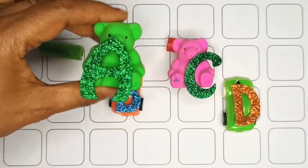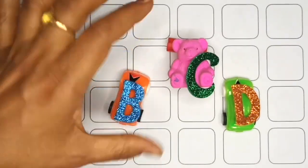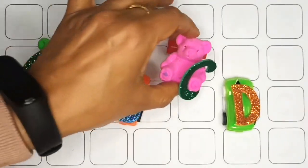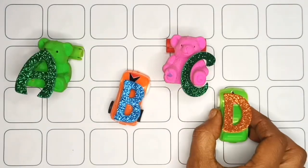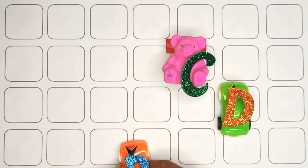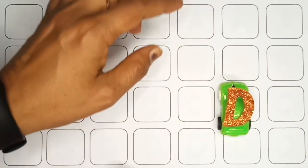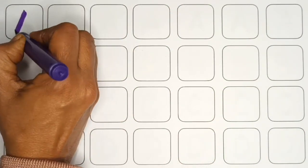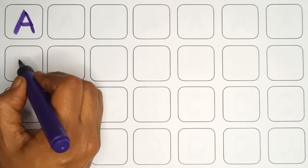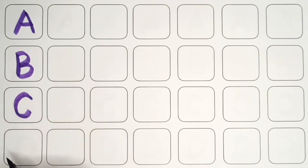A, B, C, D. A, B, C, D. A for Apple, B for Ball, C for Cat, D for Dog.